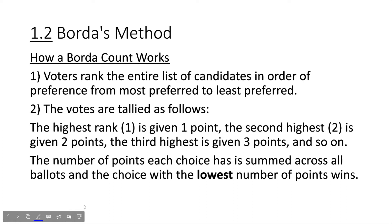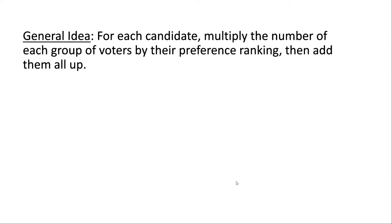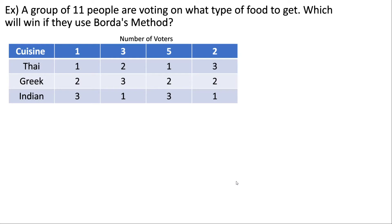This is the only voting method we're going to look at where whoever has the lowest score is the candidate that ends up winning. Just a warning: the book teaches this method a little bit differently from how I teach it. If you're doing it the book's way, you're free to do that on exams and homework assignments, but the book's way has the highest score winning. I feel the book's way is a little more complex, and students have generally found my way to be easier. The general idea for calculating a Borda count is: for each candidate, multiply the number of each group's voters by their preference ranking, then add all of them together.